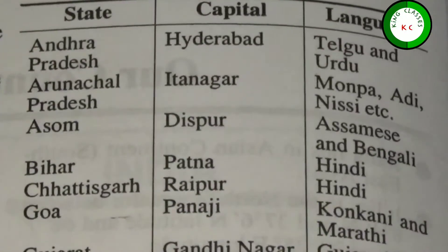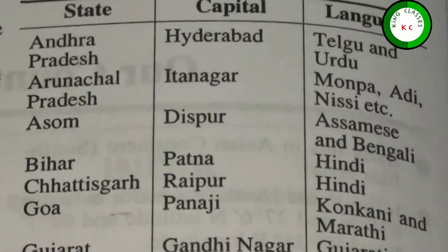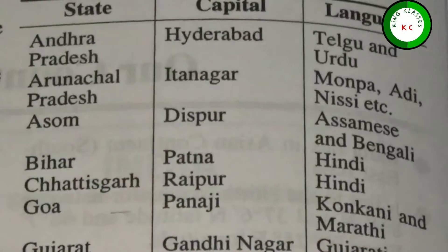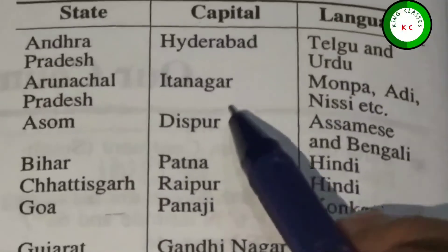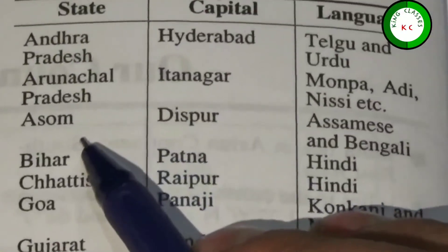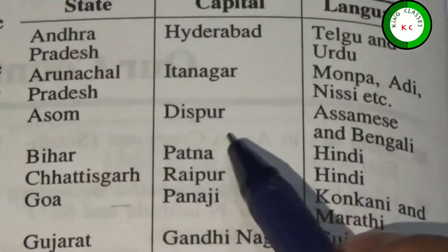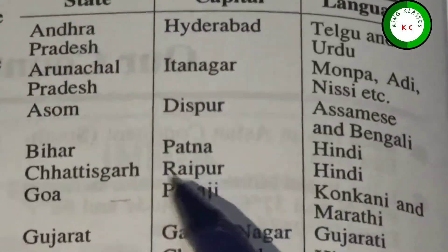The first state is Andhra Pradesh. Its capital is Hyderabad. Next is Arunachal Pradesh, its capital is Itanagar. Assam — Dispur. Bihar — Patna.